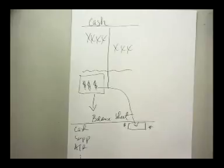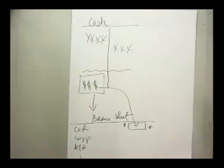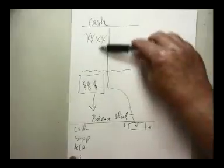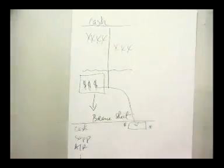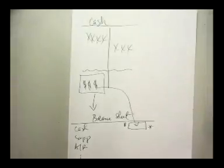You can only check yourself so many times, and eventually you're just looking at the same numbers over and over again and you don't find mistakes. The answer is the bank statement. Everything that we've entered as a debit or credit in this account should also be reflected on the bank statement at some point in time.